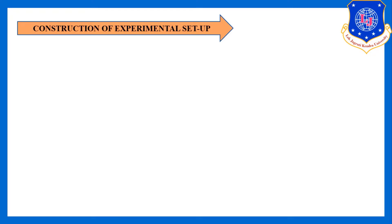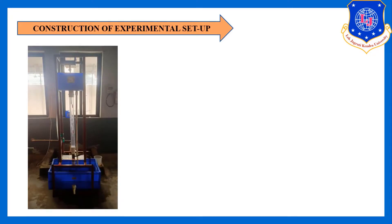Now let's see what the experimental setup looks like. This is the capillary glass tube. At the top there is a dye tank where we fill the dye. Water flows through this tube from the upper tank to the lower tank. There is a small needle-like tube; when the dye flows from the dye tank through this tube into the glass tube, you can observe the dye flow pattern visibly.